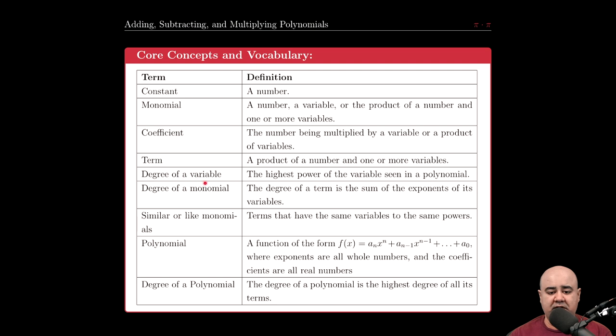The degree of a variable is the highest power of the variable we see in a polynomial. The degree of a monomial is the same thing, but if there's more than one variable, it's the sum of all the exponents of the variables in the monomial.